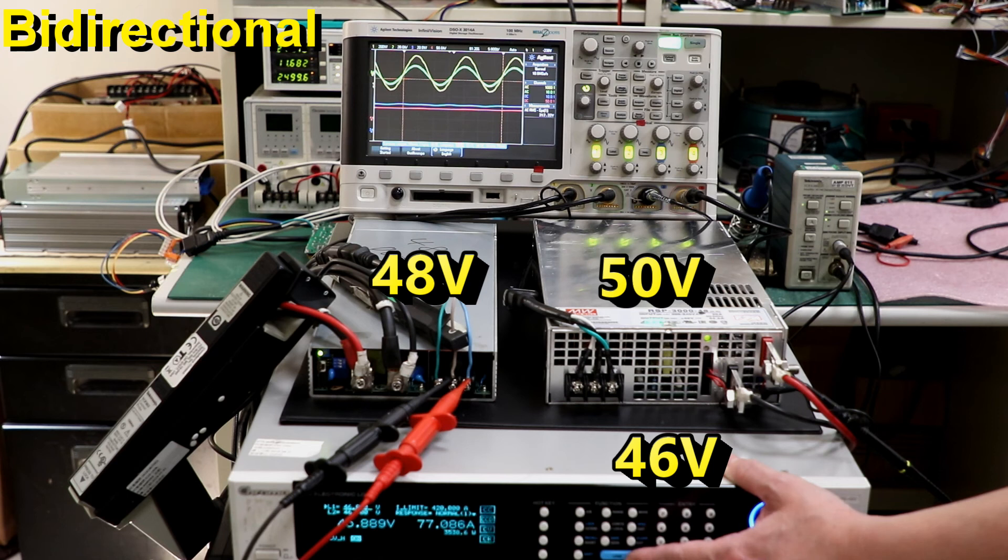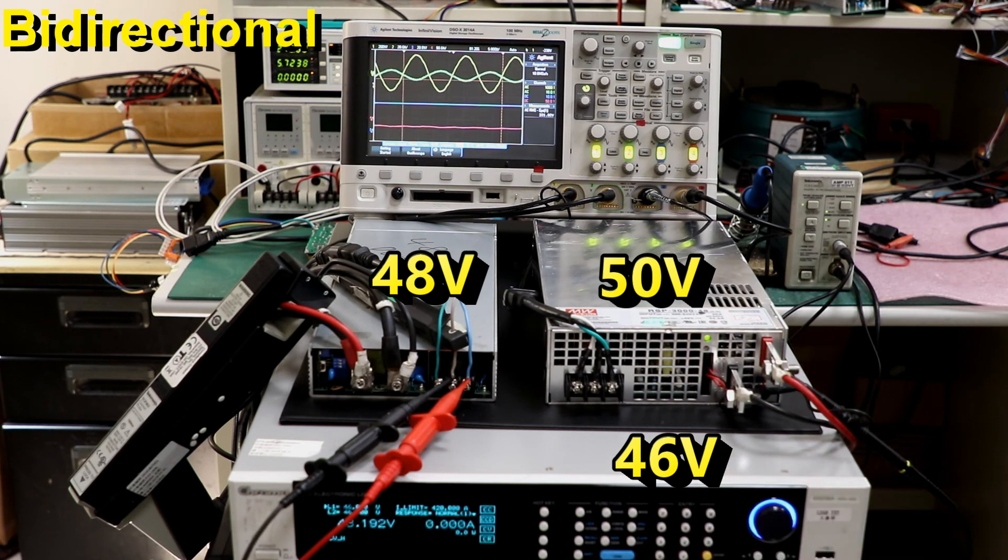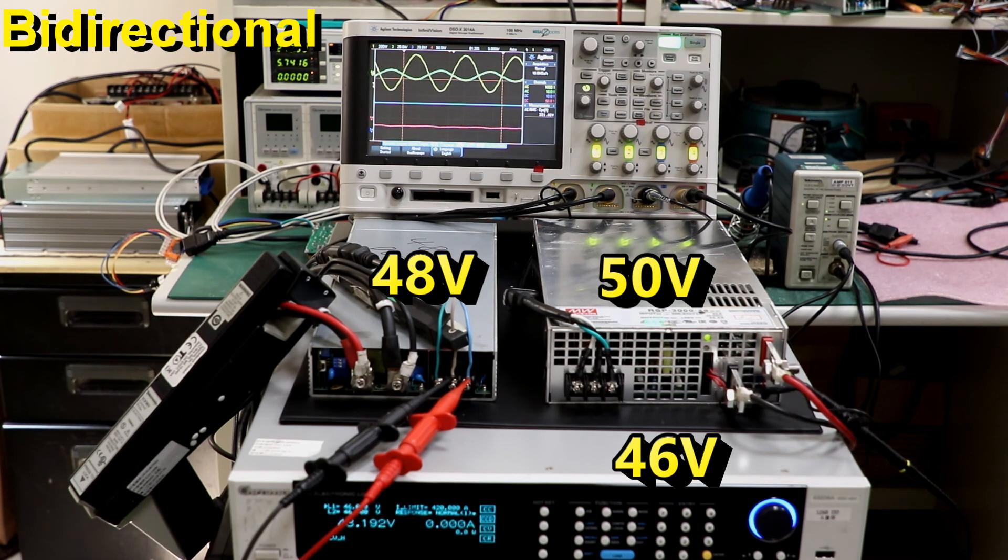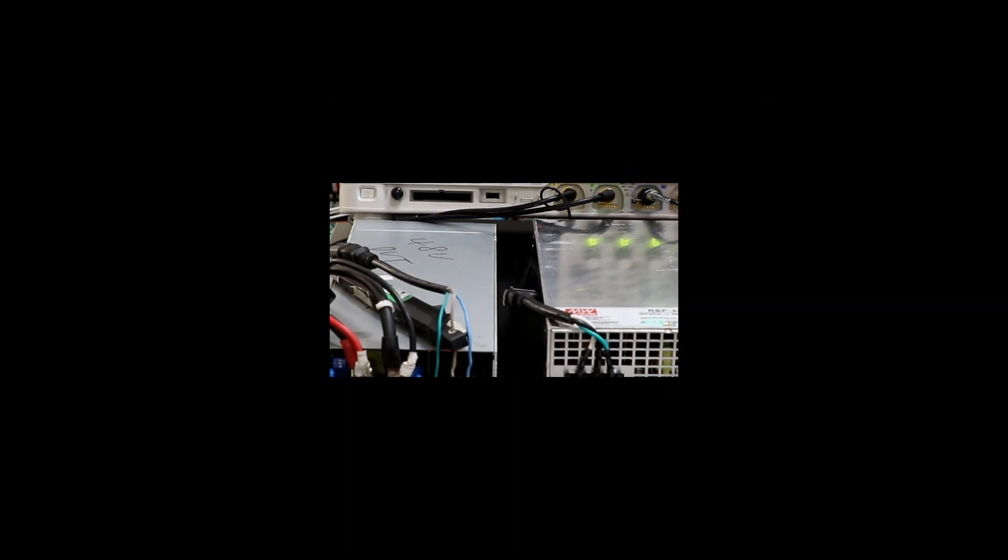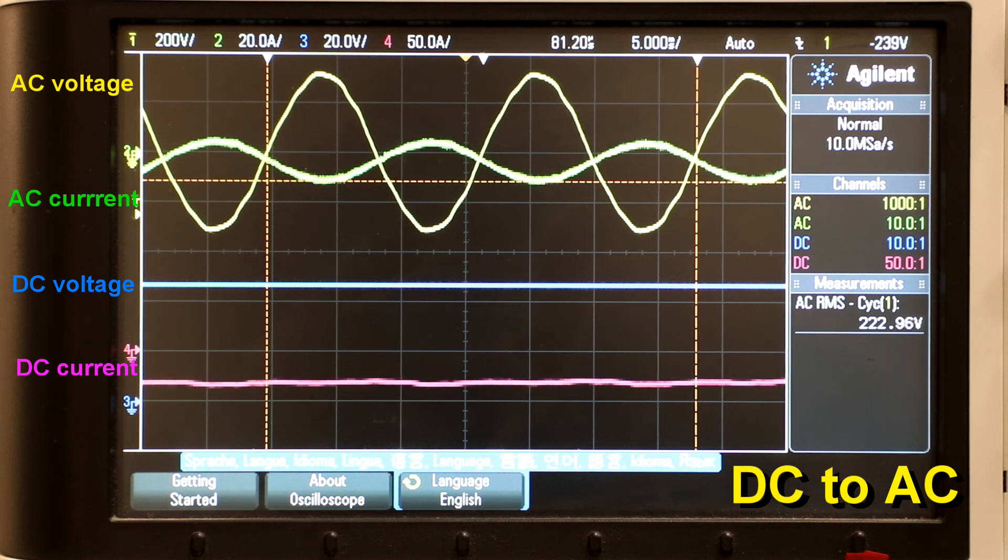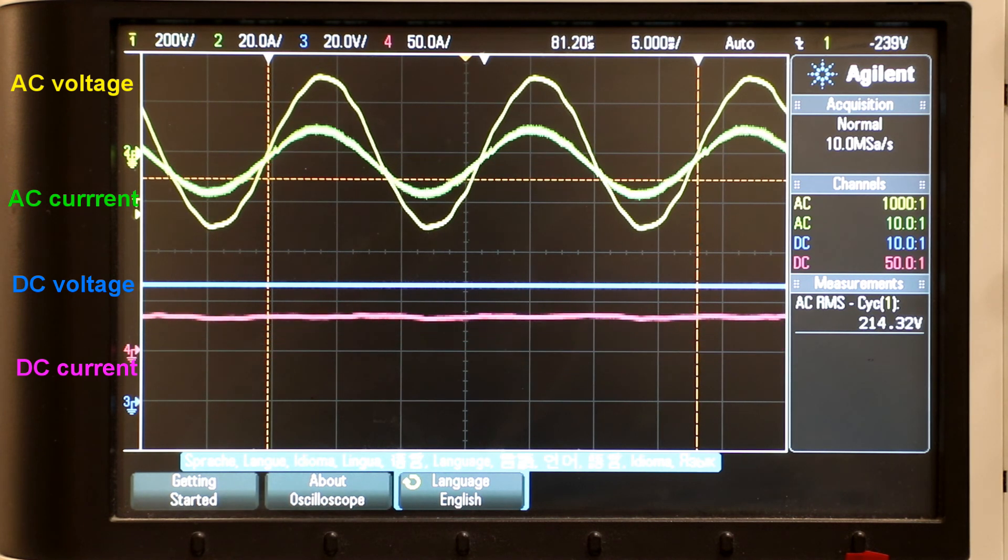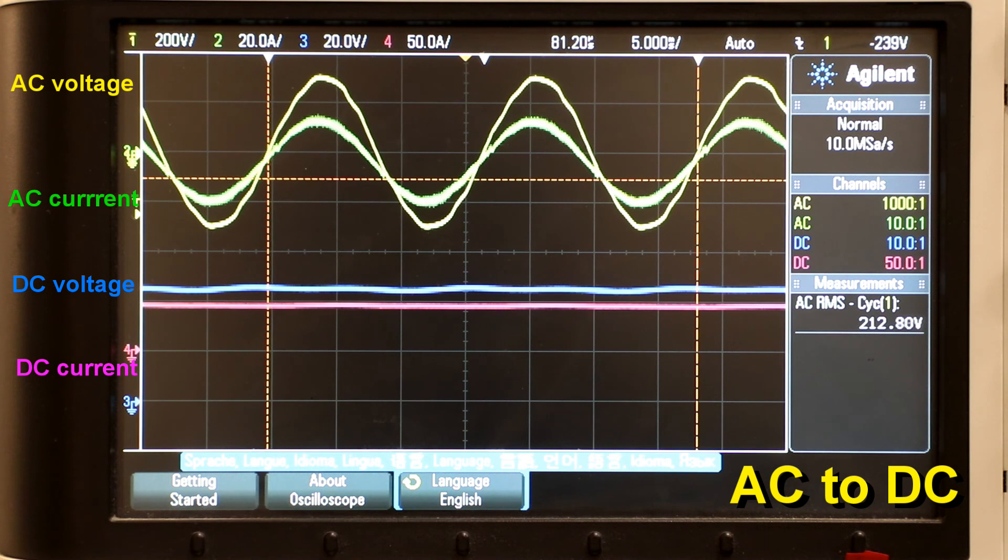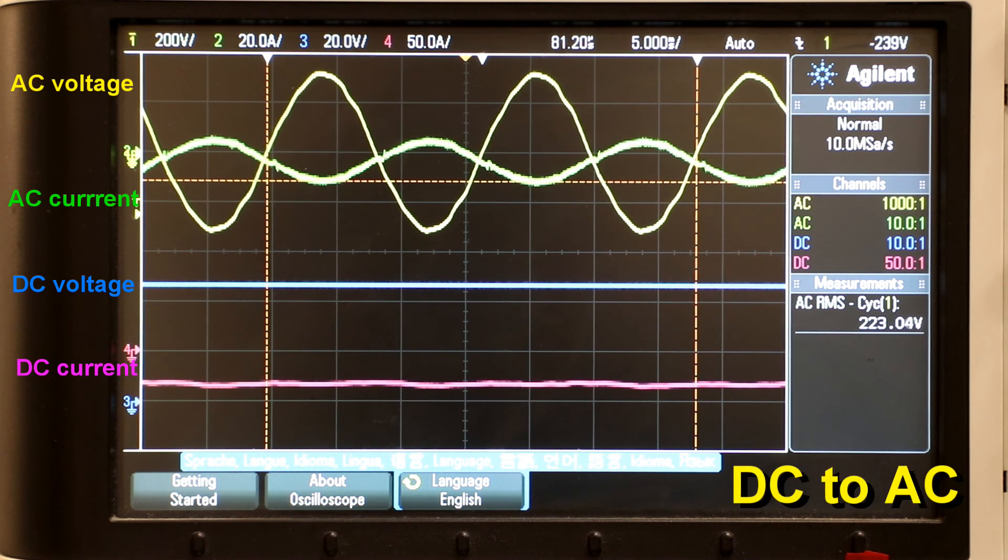Turn the electronic load on then off to let the DC end voltage of the BIC fluctuate between 46 volts and 50 volts to test its bi-direction auto-detect function. From the waveform of the oscilloscope, we can observe that the BIC switches between AC to DC and DC to AC conversion automatically according to different voltage at the DC end.